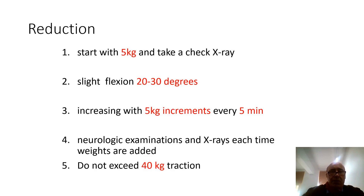In a nutshell: reduction starts with 5 kg, then take a check x-ray to make sure you don't have over-distraction. Start to increase with flexion once you've done your check x-ray — no more than 20 to 30 degrees. Flexion aids the reduction process. Once you've achieved flexion, start increasing by 5 kg every 5 minutes. There are many different schedules; this is a simple algorithm: 5 kg, flexion 20 to 30 degrees, increase 5 kg every 5 minutes.